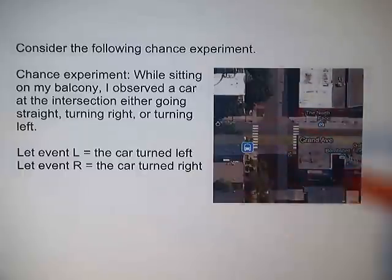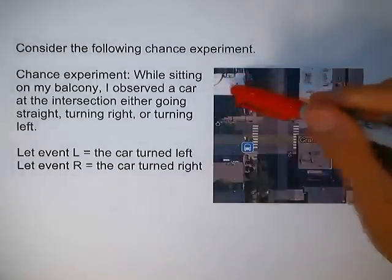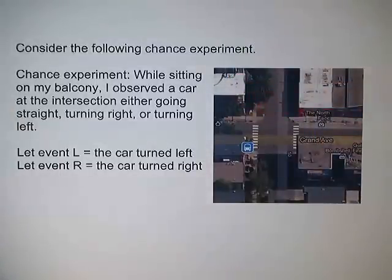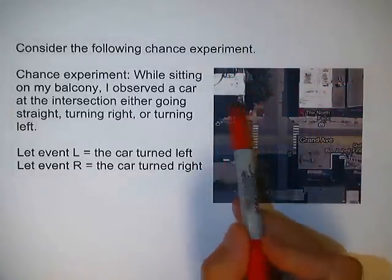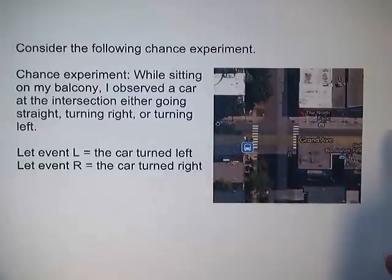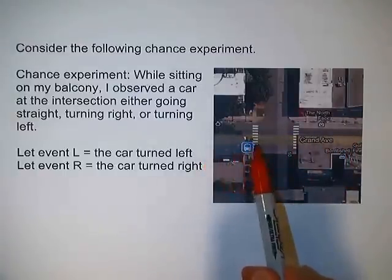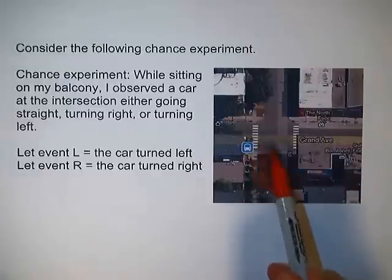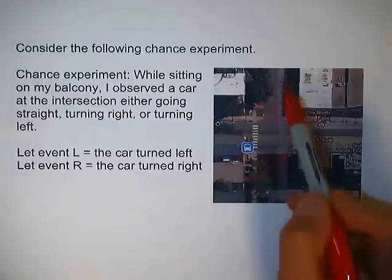This is a Google satellite picture of the intersection I live on. That's my building there. The balcony faces this way, so I watch a car travel down Grand Avenue here. As it approaches the intersection, it can either go straight, it can turn right, or it can turn left.